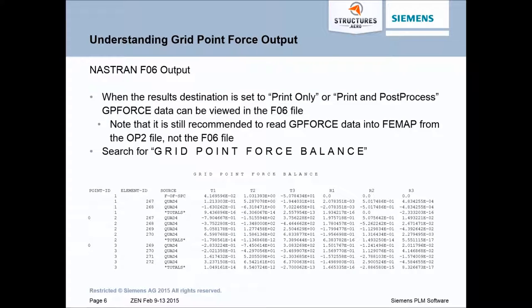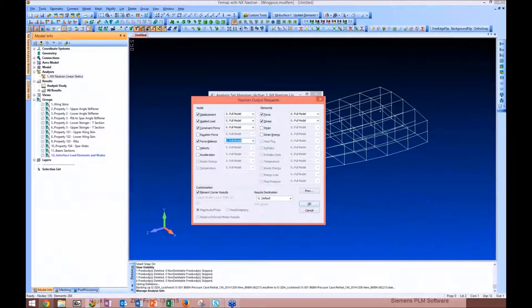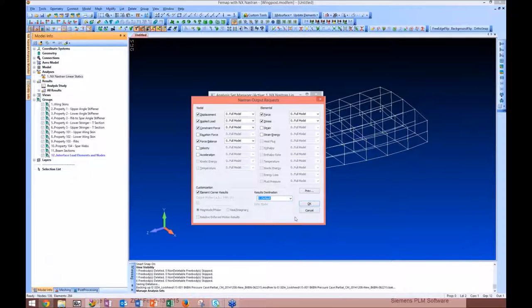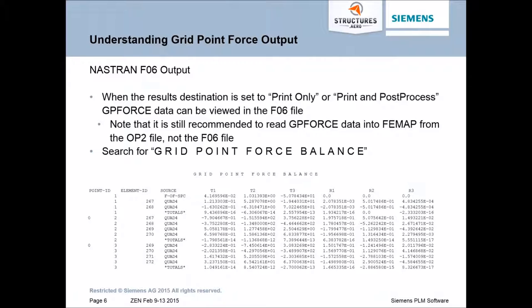Looking at the grid point force output — this is what it looks like in the Nastran F06 file. In your output request, you have a results destination: print only, post only, print and post, or default. The default is post only, which writes everything to the OP2 file. It's still recommended to read the GP force into FEMAP from the OP2 file. If you want to search for this in the F06 file, you can search for the string 'grid point force balance', keeping in mind there is a space between each letter, like G-space-R-space, and it will take you to that exact section.